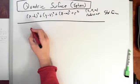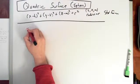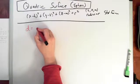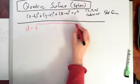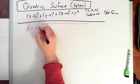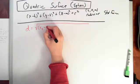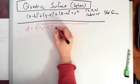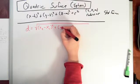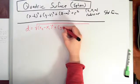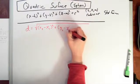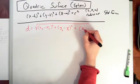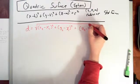The distance formula is d equals the square root of (x2 minus x1) squared plus (y2 minus y1) squared plus (z2 minus z1) squared.